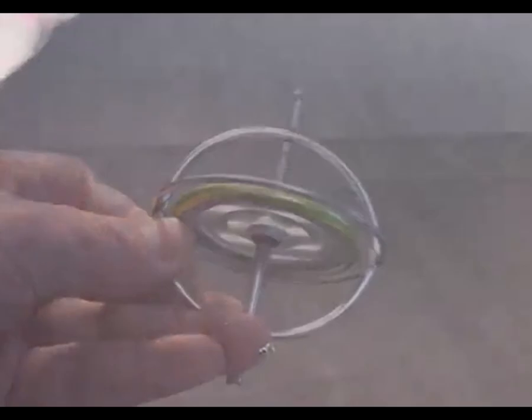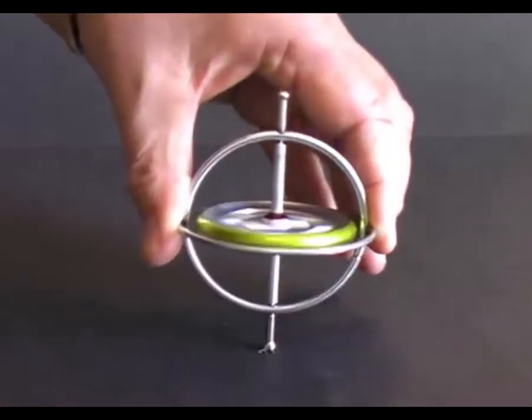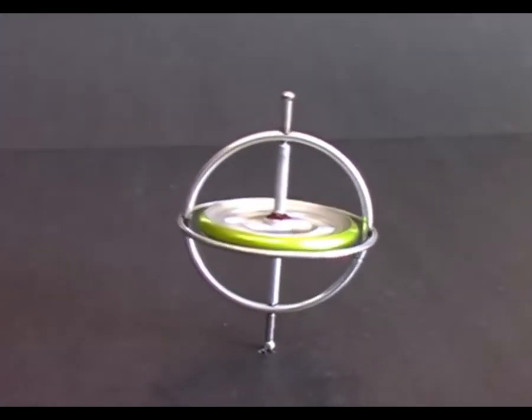Now when I stand it on the tabletop, it stays vertical. The spinning wheel is creating a force that holds the gyroscope upright.